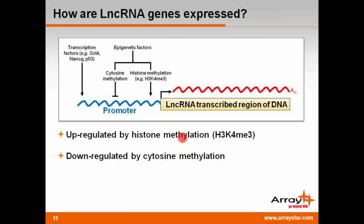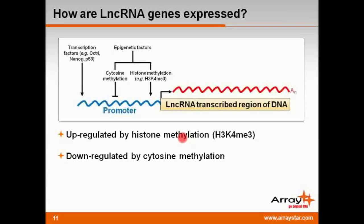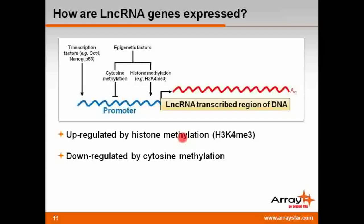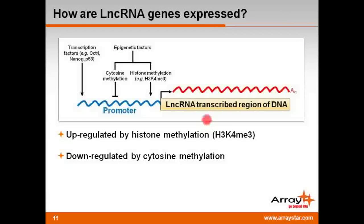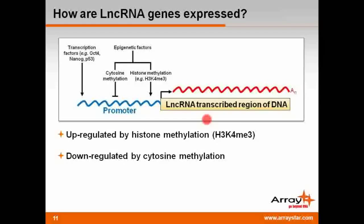In another example, Leonard Lipovich's lab at Wayne State University demonstrated that two LNCRNAs are regulated by the transcription factors Oct4 and Nanog in the differentiation of mouse embryonic stem cells. In addition, LNCRNAs are subject to control by epigenetic chromatin modifications. In a collaboration between John Rinn's and Eric Lander's labs, it was shown that many LNCRNA genes carry a chromatin signature — histone H3 lysine 4 trimethylation in promoter regions, and histone H3 lysine 36 trimethylation in the body of a gene. These K4-K36 domains are found in protein coding genes too, and are excellent predictors of transcribed units.